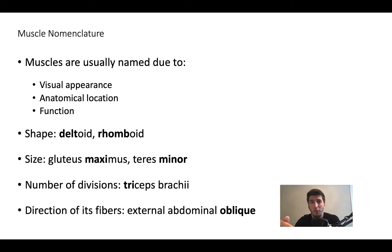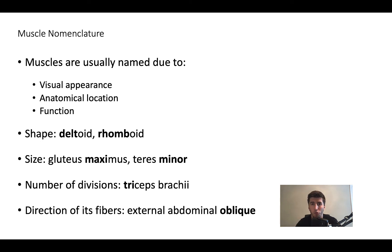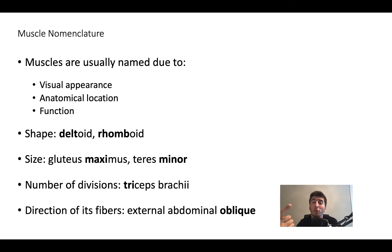These next slides are really going to help you with nomenclature and start remembering the rules for how muscles are named — really getting the connections going, not just learning the Latin. Muscles are named due to a couple of different things: one, visual appearance; two, anatomical location; and three, function. Makes sense, right? Why would we name something random if we can name it logically?